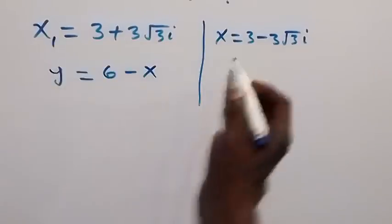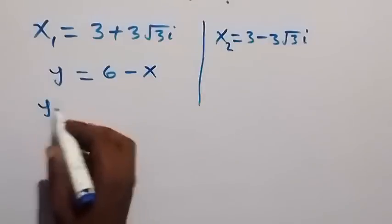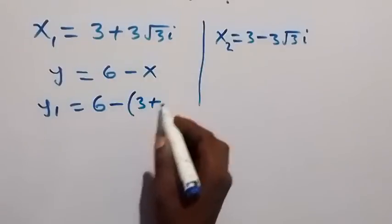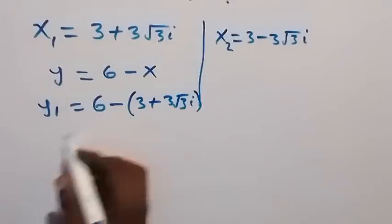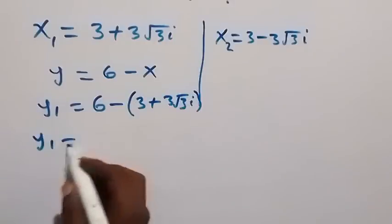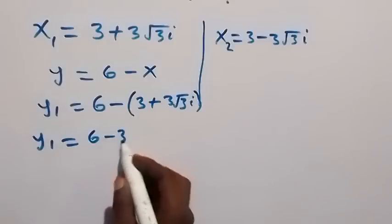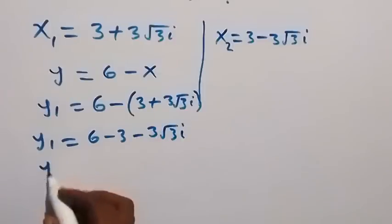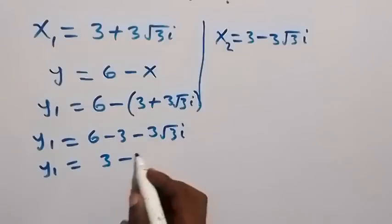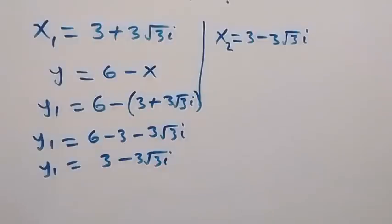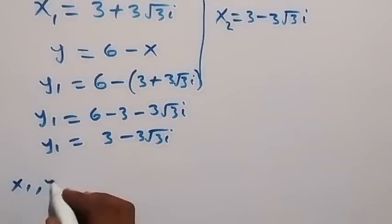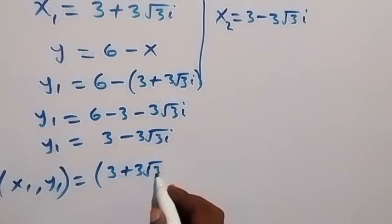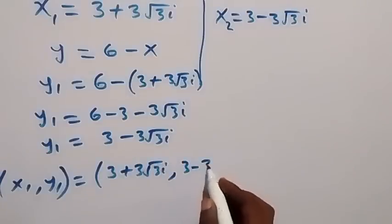So if this is x1 and this is x2, then y1 will be equals to 6 minus x1. That's 6 minus the bracket 3 plus 3 root 3 i. And from here, we open the bracket. So y1 will then be equals to 6 minus 3, then minus 3 root 3 i. This becomes y1 equals to 3 minus 3 root 3 i. So we have x1, y1 as: 3 plus 3 root 3 i, comma, 3 minus 3 root 3 i.